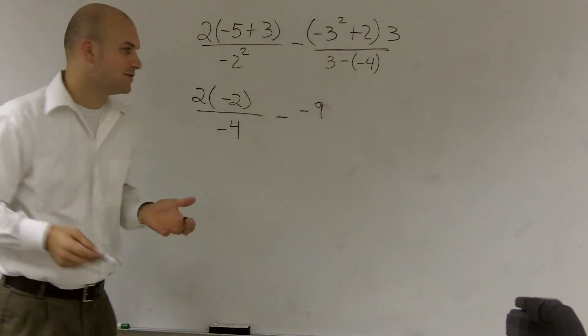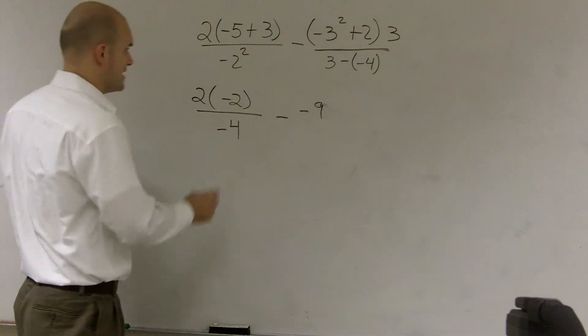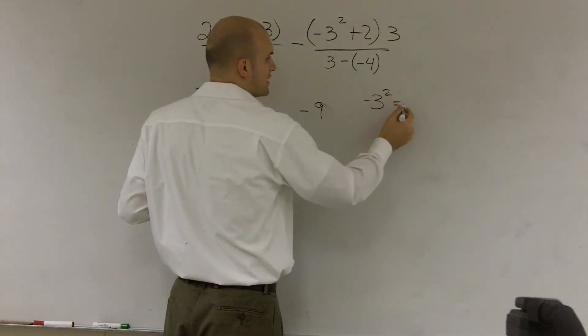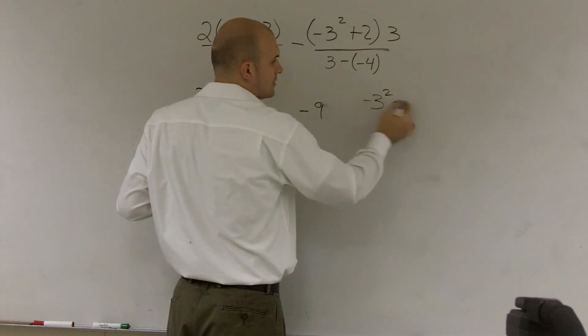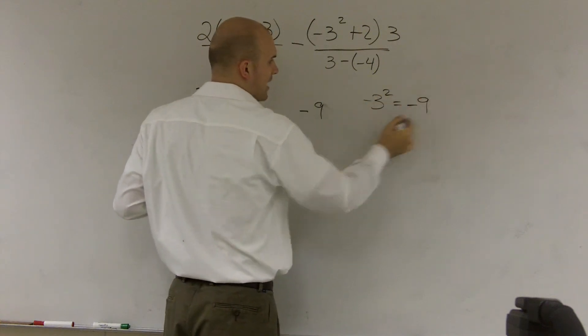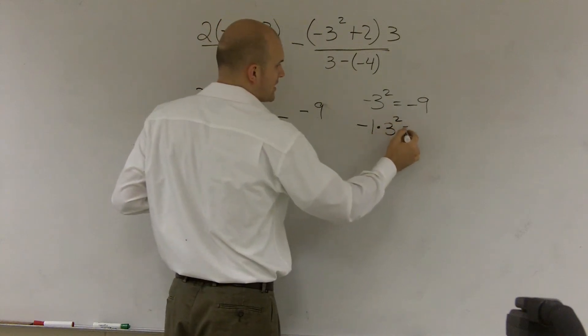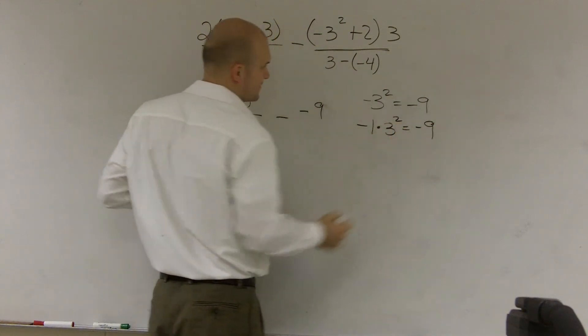Now, obviously, if I wanted to say 'why isn't a negative 3 equals positive 9?' Well, be careful. Negative 3 squared is equal to a negative 9. Why? Because this can be rewritten as negative 1 times 3 squared, which is equal to a negative 9.